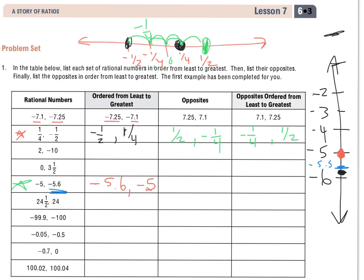So if I do the opposites, based on what we did up above, I know that if it's 5 and 6 tenths away from 0 on one side, it's 5 and 6 tenths away from 0 on the other. So I had a negative for my first value. Now I have a positive 5 and 6 tenths. And the same thing for the negative 5. It was 5 jumps in the negative side. Now it's 5 jumps to the positive. In order from least to greatest, 5 is less than 5 and 6 tenths.